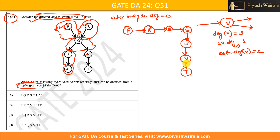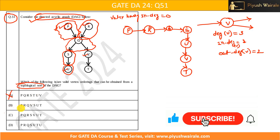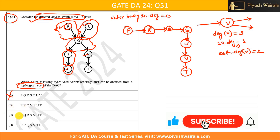Let's see whether we have this in the options or not. If you observe option A: P, Q, R — Q cannot come before R because there is an incoming arrow from R to Q. So this option is not correct. P, R, Q must be there, or R, P, Q must be there. Q can come only after both P and R. So eliminate options A and C as well.